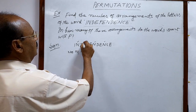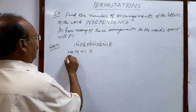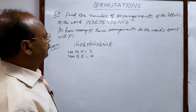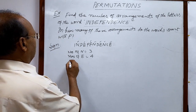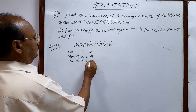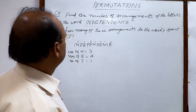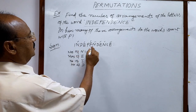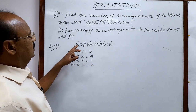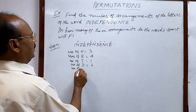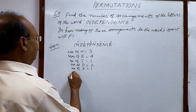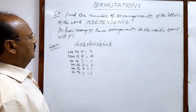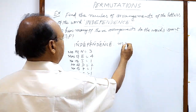The number of E's is 4. Then the number of I is 1, number of D is 2, number of P is 1, number of C is 1. Total should be 12 — the total number of letters is 12, so N is equal to 12.